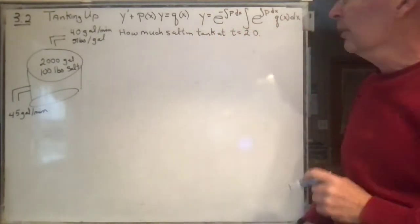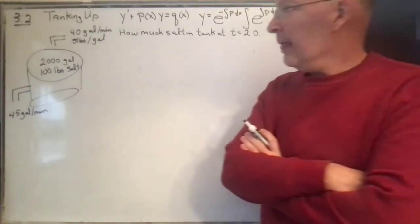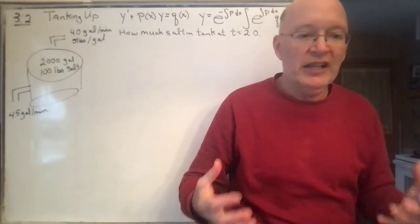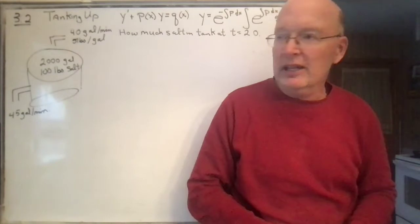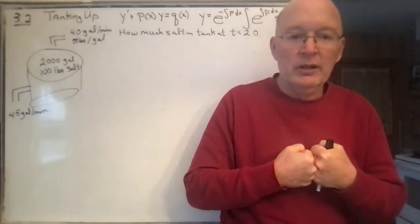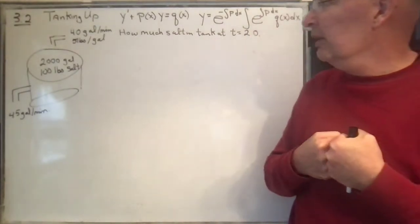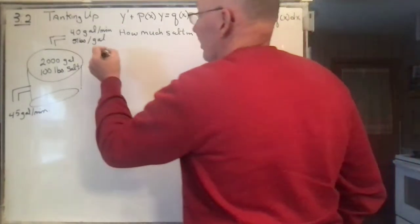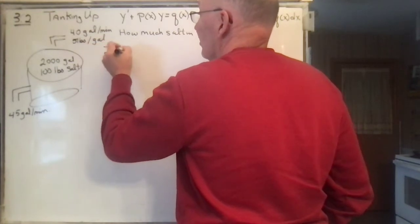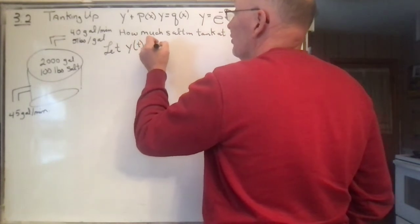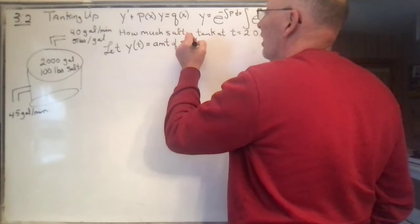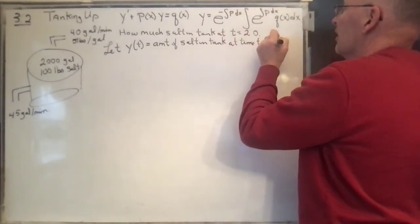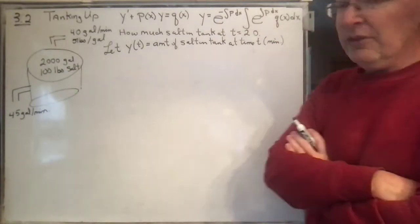We're going to use units of minutes. The key to any real-world problem is connecting the math to the physical world, and the key word is 'let.' We need to determine how much salt is in the tank at T equal to 20. So: let Y of T be the amount of salt in the tank at time T, in minutes. That's the power of this word 'let.'